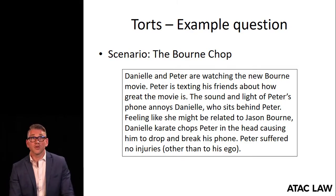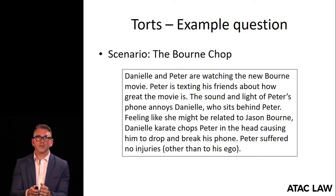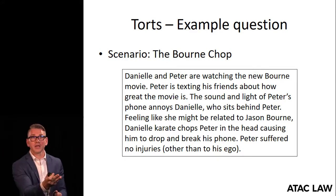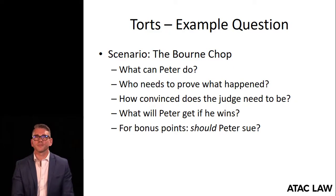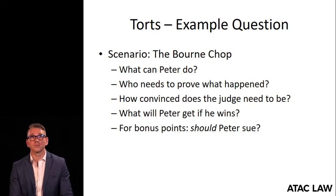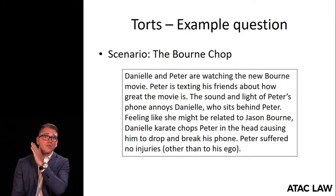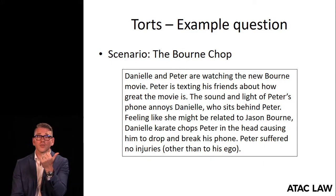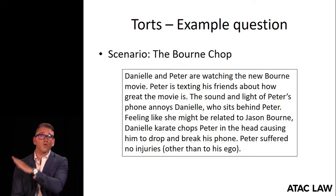Danielle and Peter are watching the new Bourne movie. Peter is texting his friends about how great the movie is — he's sitting in front. The sound and light of Peter's phone annoys Danielle, who sits behind him. Feeling like she might be related to Jason Bourne, Danielle karate chops Peter in the head, causing him to drop and break his phone. Peter suffered no injuries other than to his ego. So, what can Peter do? Peter can sue Danielle for battery — the physical contact — and he can also sue her for breaking his phone, to put him back in the position he was before the karate chop.